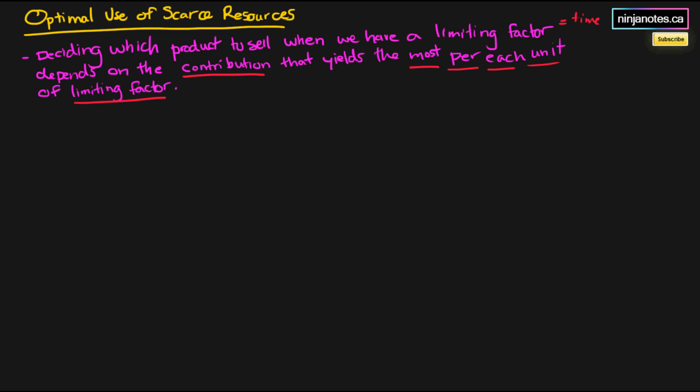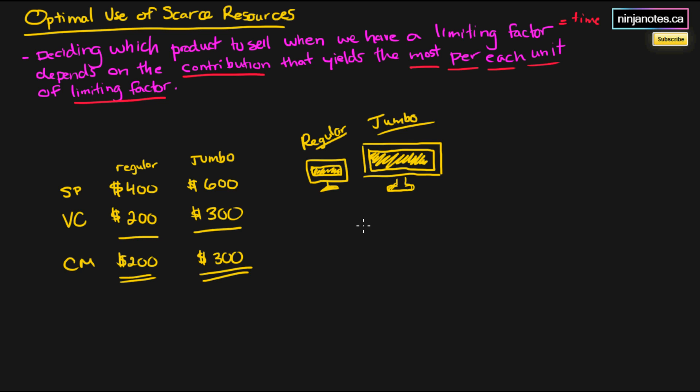What do I mean by this? We essentially run the electronics part of Walmart, and they sell regular TVs and jumbo TVs. The sales price of each are $400 and $600 respectively. The costs are $200 and $300 for regular and jumbo, and their contribution margins are $200 and $300 as well.